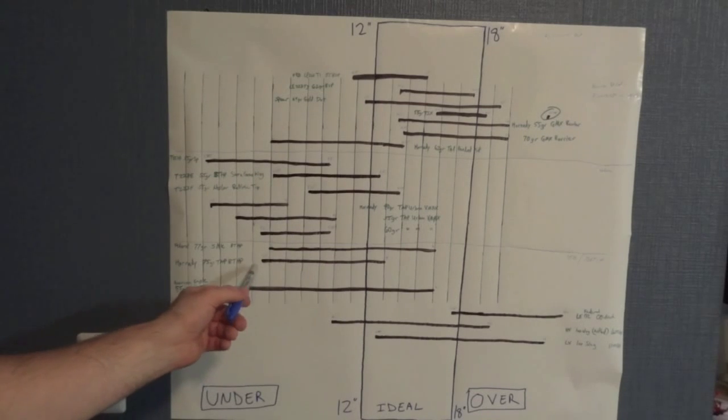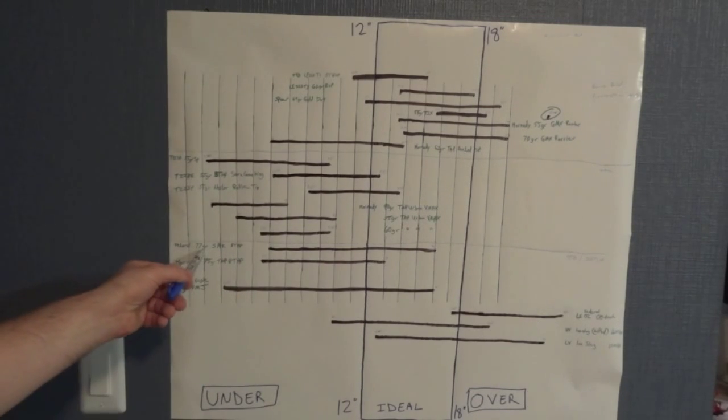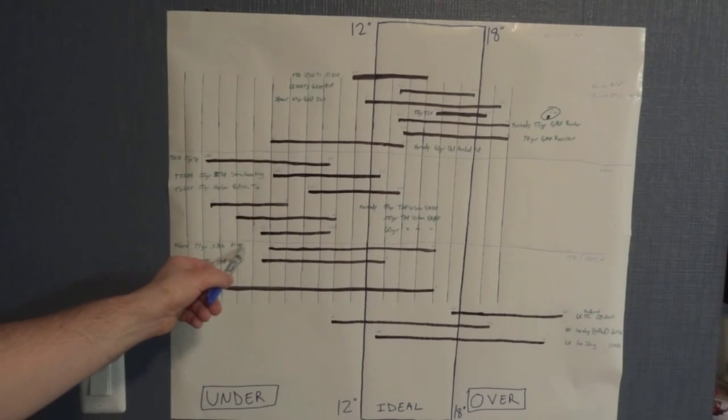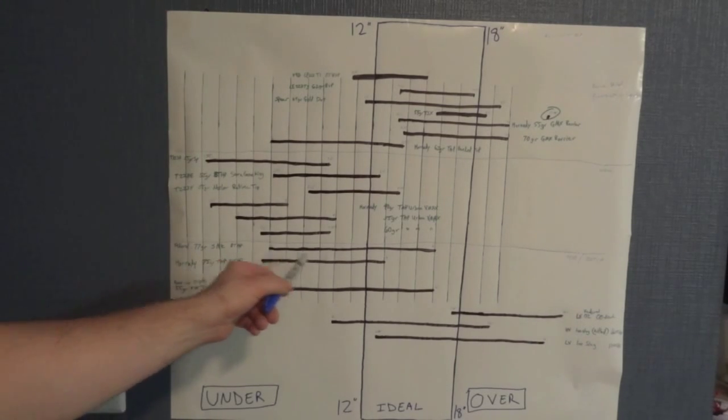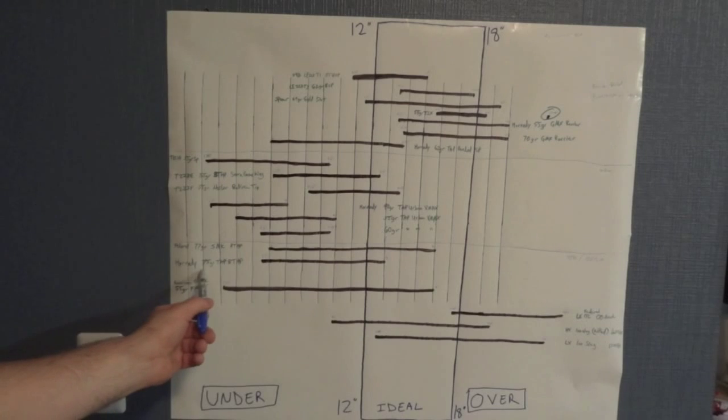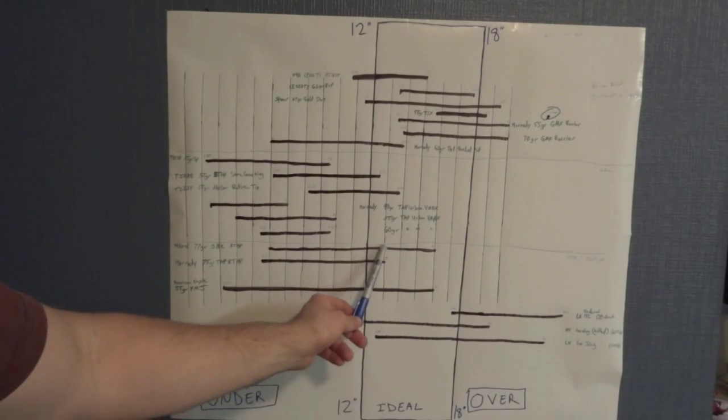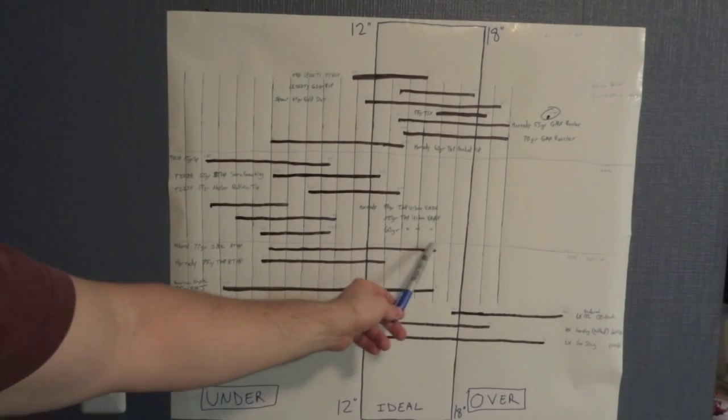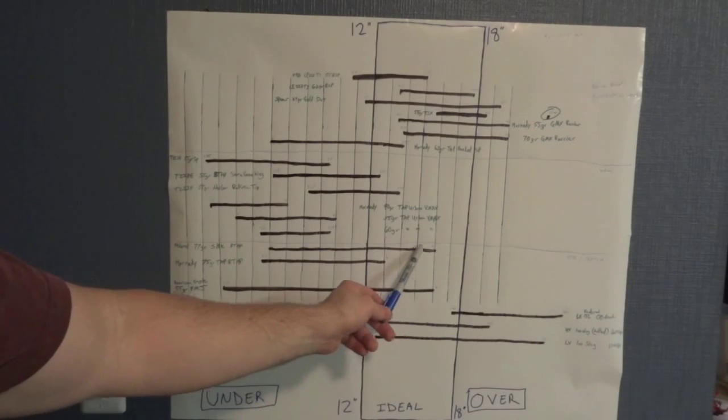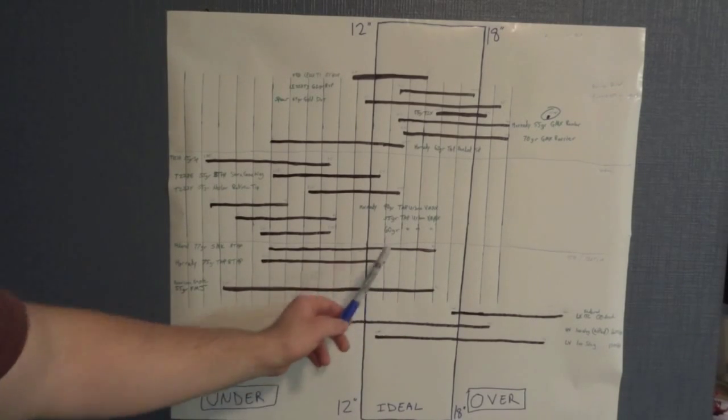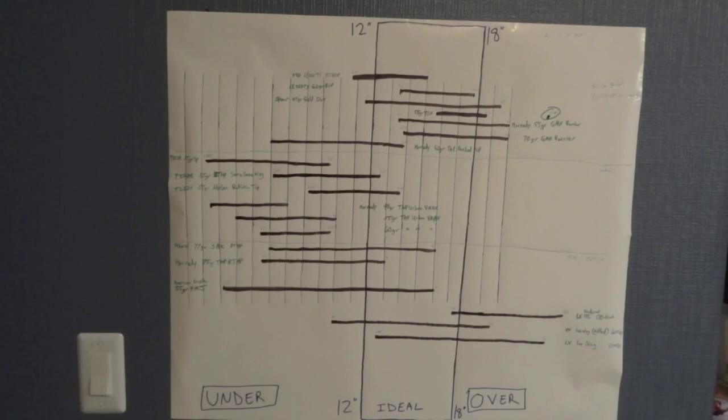Now in contrast we look at the two match loads. We have a 77 grain Sierra Match King boat tail hollow point from Federal, going from six inches all the way out to 16 inches. And we have the Hornady 75 grain TAP boat tail hollow point which is five and a half inches to 13 inches. You can see that the 77 grain has a lot more impact inside of the ideal penetration range. But over penetration for each of these, neither of them are a concern.